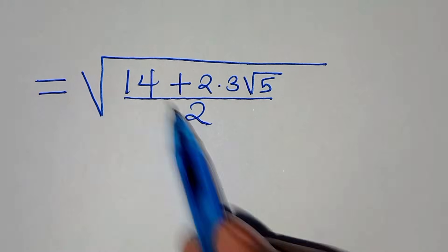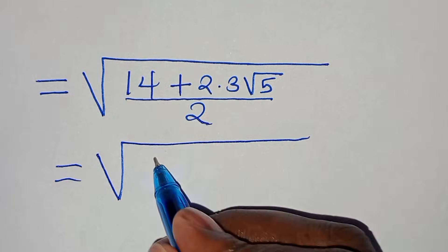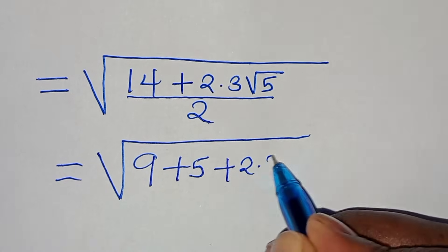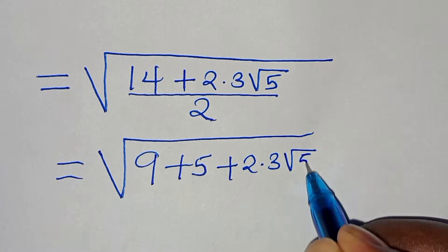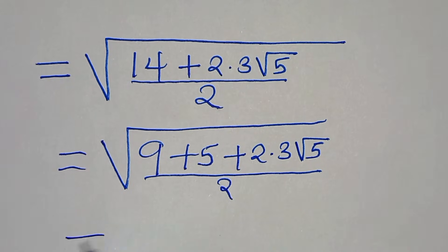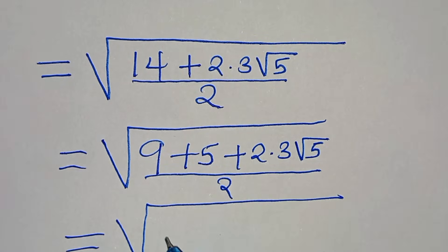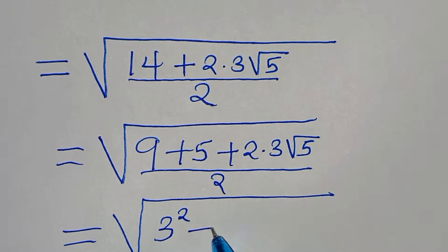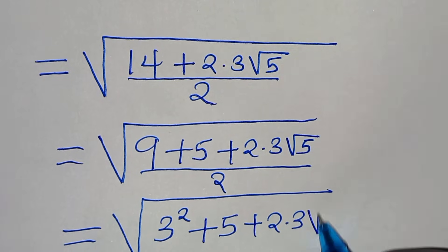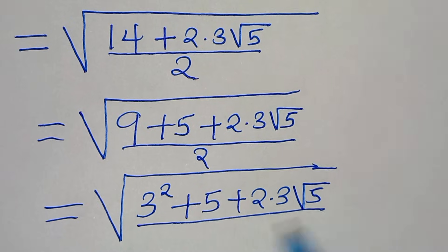The next step is that we can express 14 as 9 plus 5, then plus 2 times 3 square root of 5. We can express 9 as 3 to the power of 2, then plus 5, then plus 2 times 3 times square root of 5, all divided by 2.